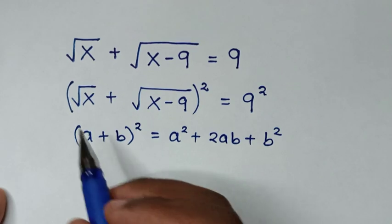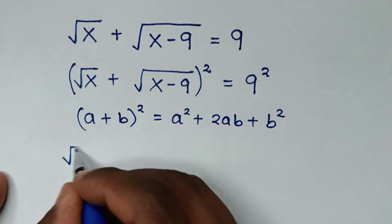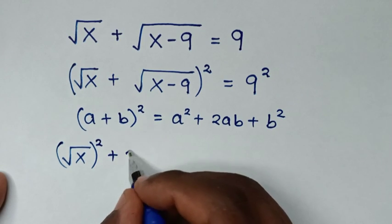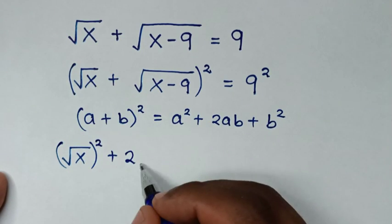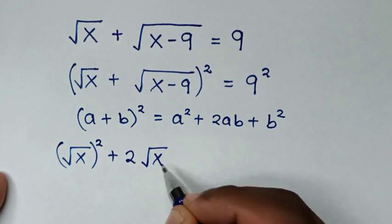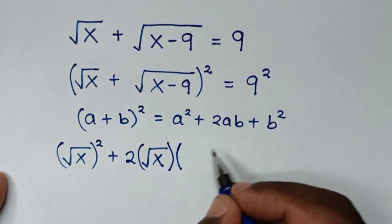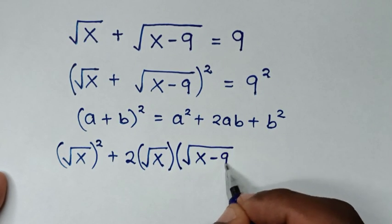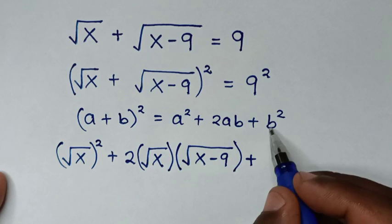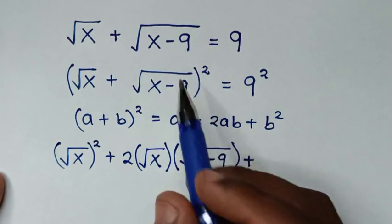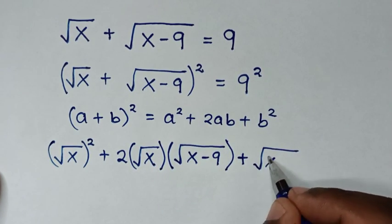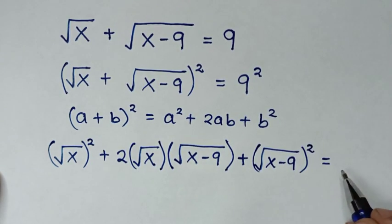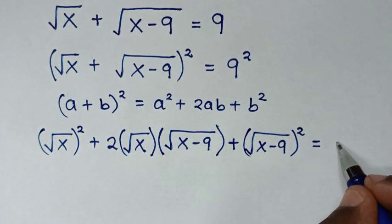So a squared is square root of x, bracket squared. Then plus 2 times a, where a is square root of x, times b, which is square root of x minus 9, bracket. Then plus b squared, which is square root of x minus 9, bracket squared. This equals 9 squared, which is 81.